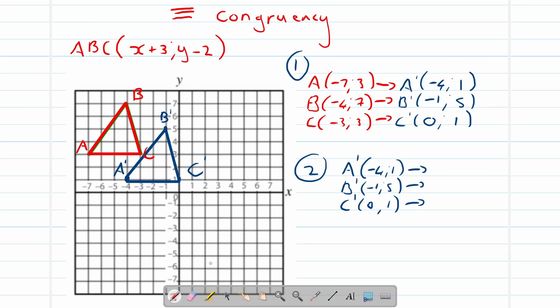So if we translate this again, the new coordinate is A double accent, B double accent, C double accent, because it underwent another translation or transformation. Now remember, we are focusing on translation.